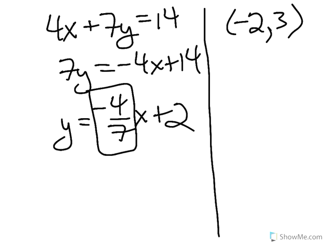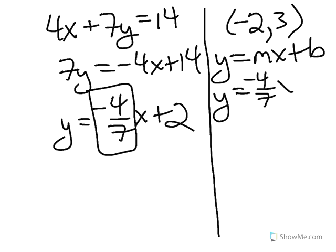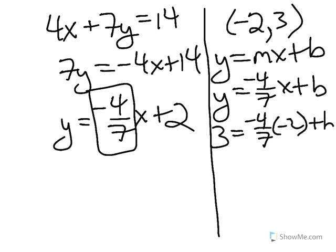Well, slope-intercept form is y = mx + b. The slope that we found is -4/7. But we don't know what b is, so we're not done. We need to find out what the y-intercept is. Fortunately, we do have values we can use for x and y. If y is 3 and x is -2, we can use this information to discover what b is.